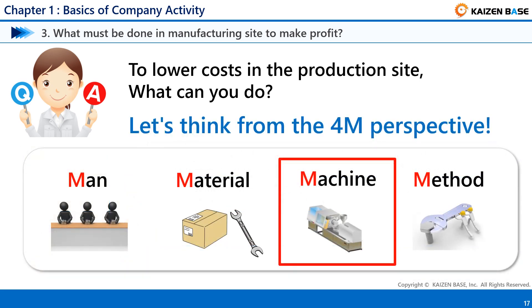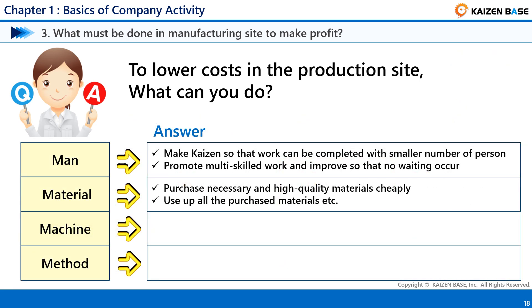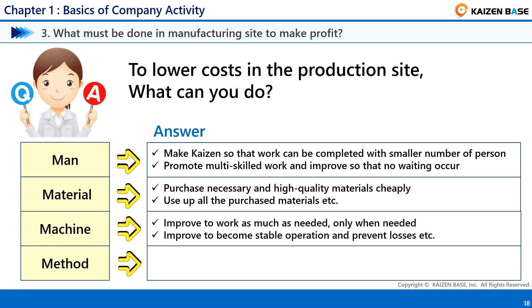Next, from the perspective of Machine: improve to work as much as needed, only when needed, and improve to achieve stable operation and prevent losses. Those are what we can do to lower the production cost from the perspective of machine.